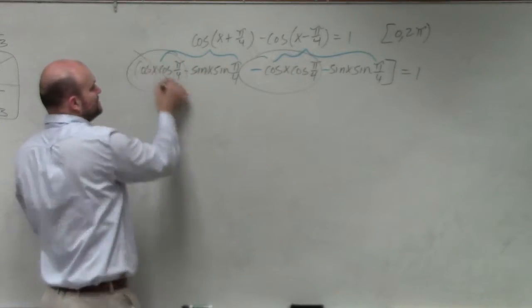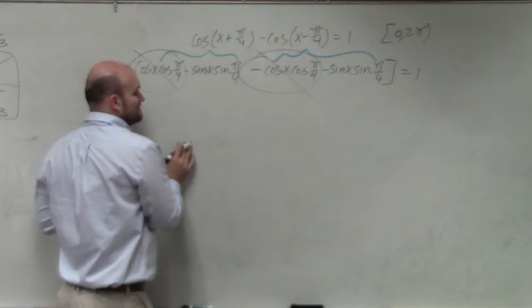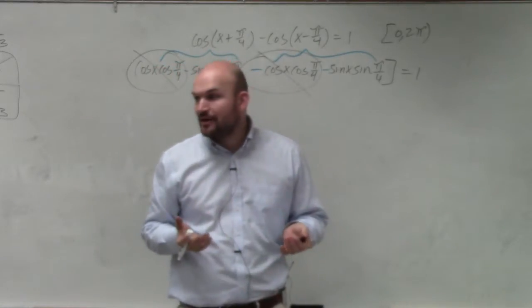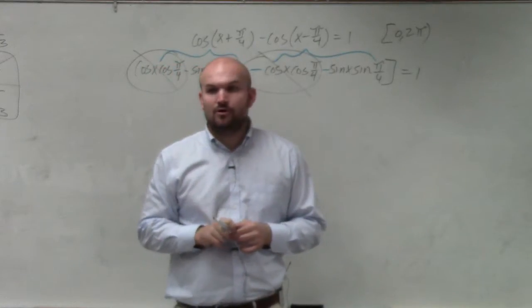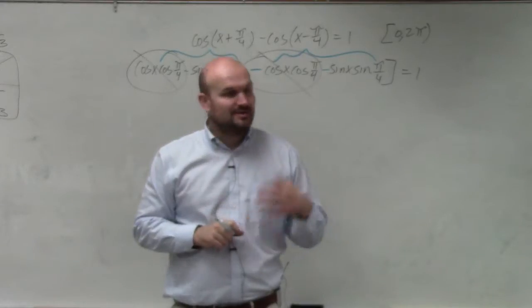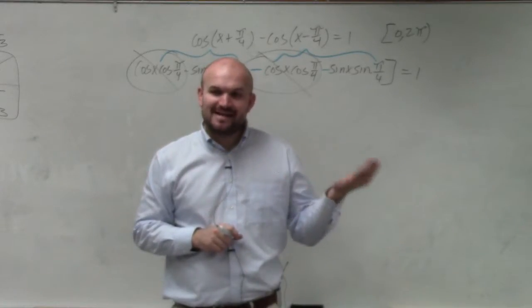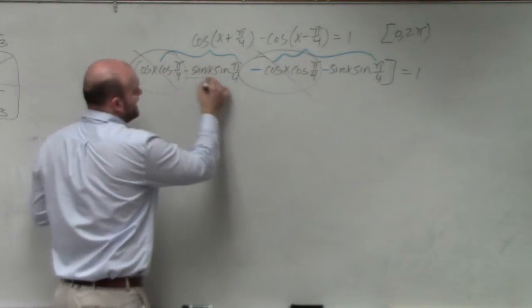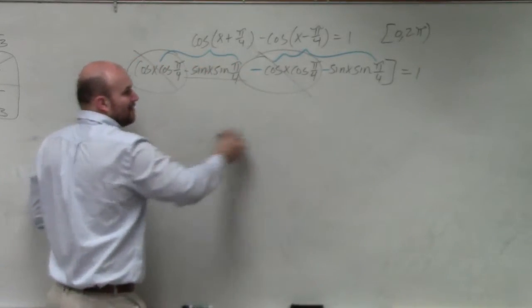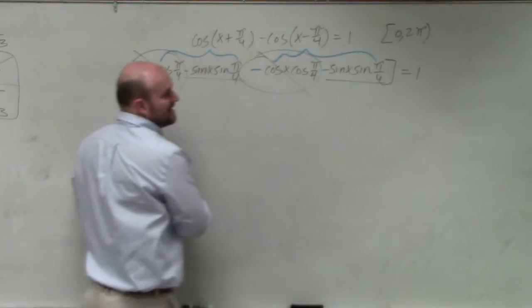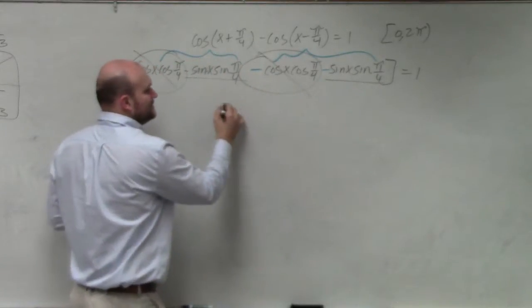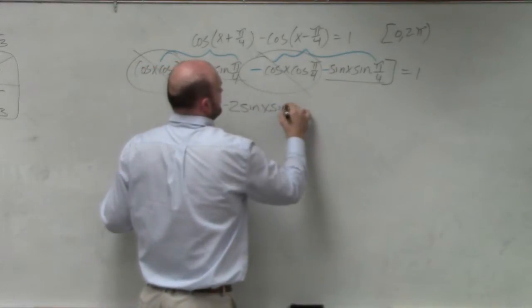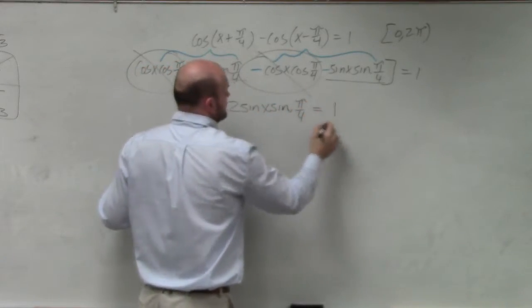And if you owe me a dollar, and then you borrow another dollar, you now owe me two dollars. So if you have negative x minus x, that's negative 2x. We have a negative sine x sine pi over 4 minus a negative sine x sine pi over 4. That gives you a negative 2 sine of x sine of pi over 4 equals 1.